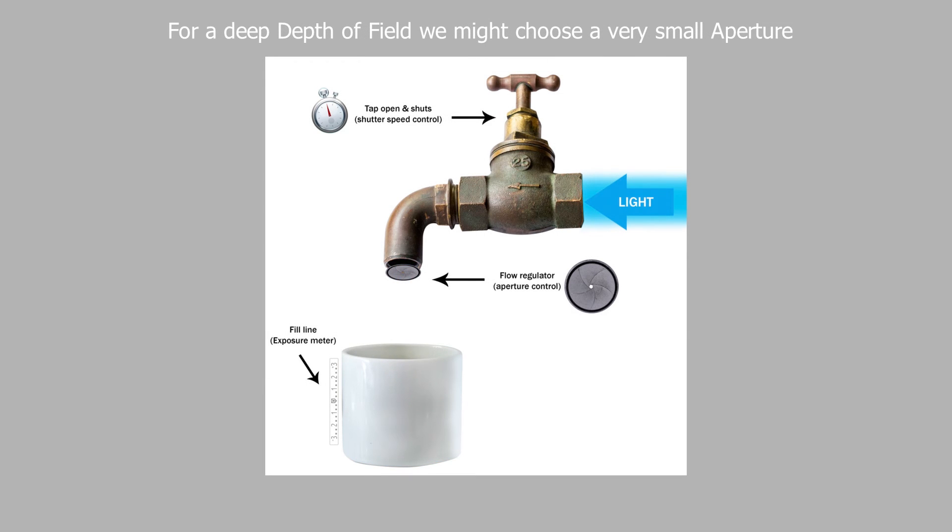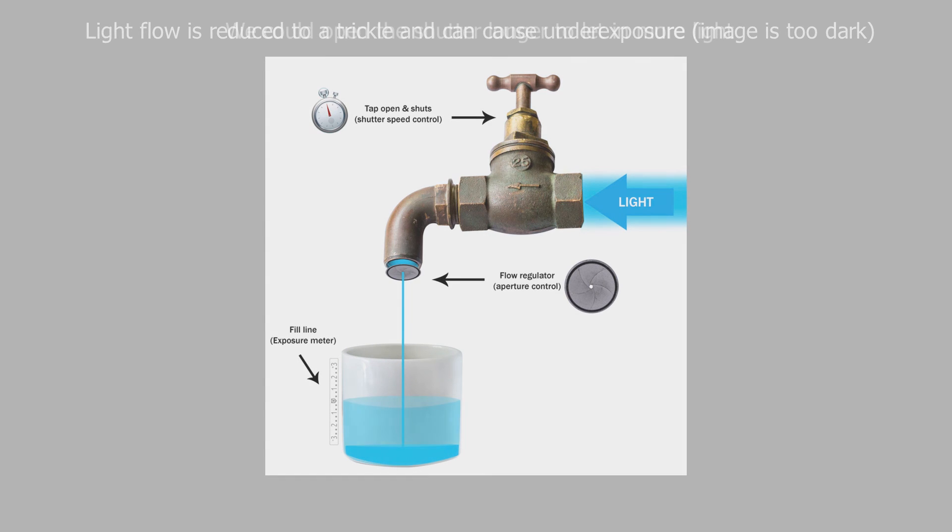For a deep depth of field, we might choose a very small aperture. Light flow is reduced to a trickle and can cause underexposure where the image is too dark.